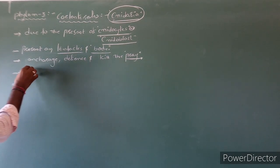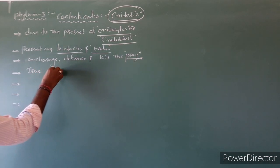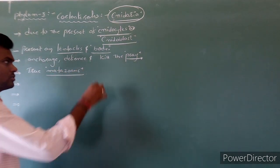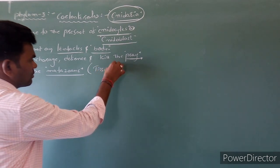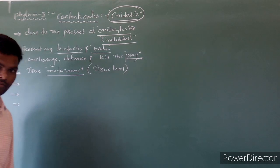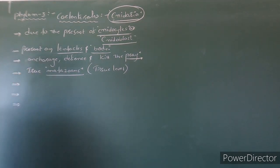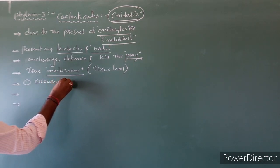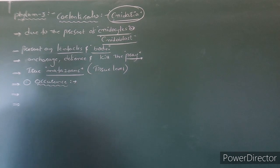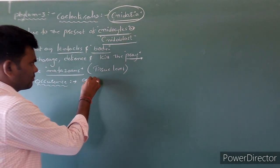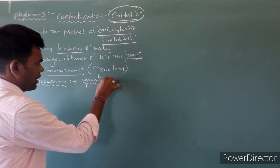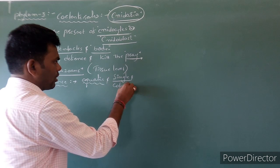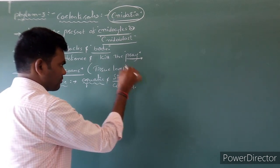Coelenterates are the first true metazoans, because true tissue-level organization is present. Now let us list some of the basic fundamental characters. First one is regarding occurrence — these are aquatic. Some are solitary and some are colonial — a group of animals.